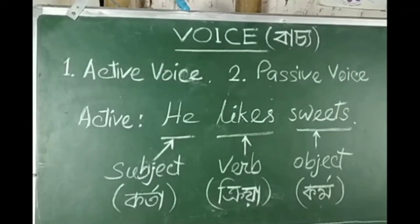The sentence structure involves a subject and an object. In active voice, the subject performs the action. In passive voice, the object becomes the focus of the sentence.